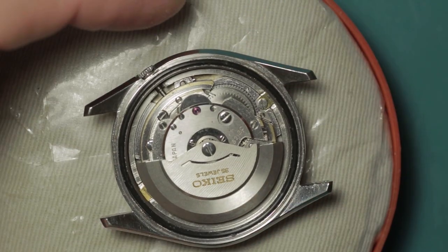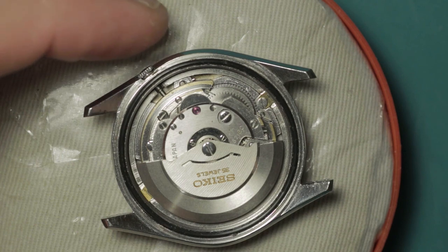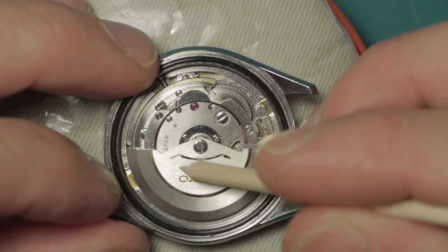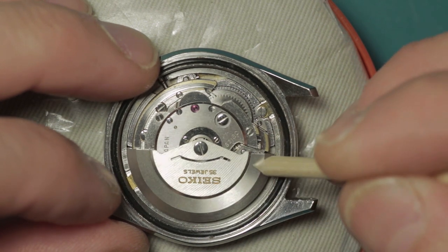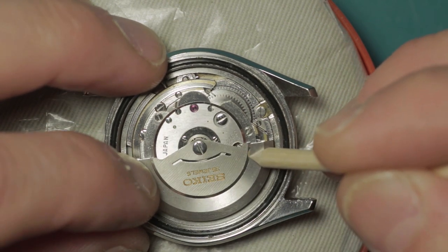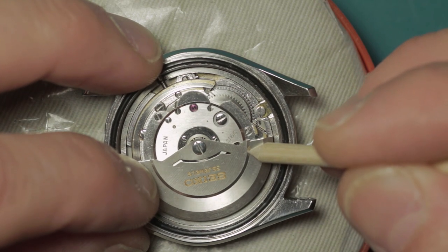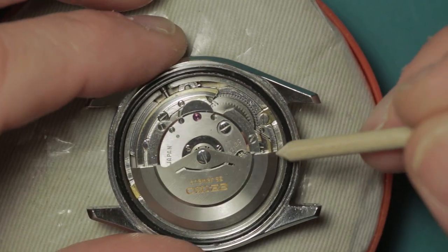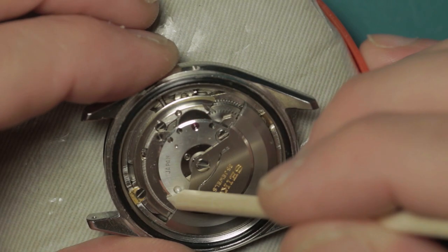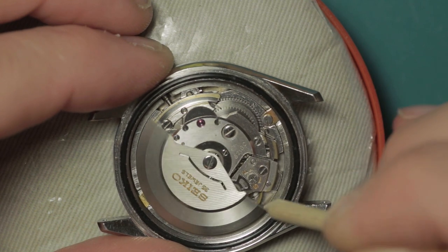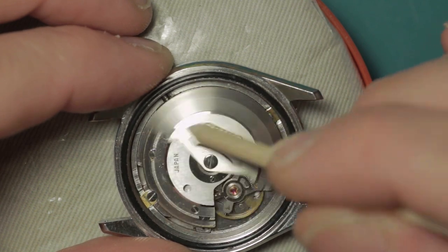This is not at all uncommon with vintage Seiko, and it's typically down to a worn bearing here. That one doesn't actually look too bad, but there's a little bit of wiggle there as you can see. I've certainly seen worse, and that's evidenced by the little bits of brassing around the edges of the bridges down here.